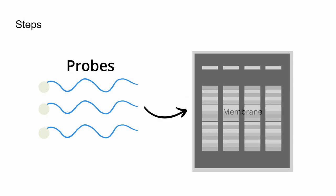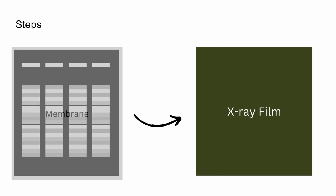These probes are then introduced to the membrane, and excess probes that did not bind with any DNA sequences are then washed off. After this, an x-ray film is put onto the membrane, and autoradiography is used to detect the desired fragments.